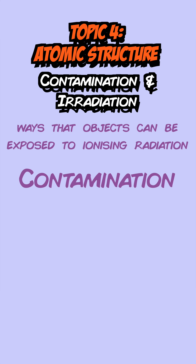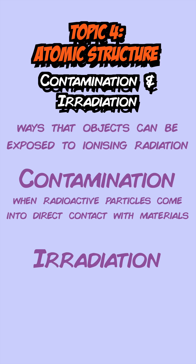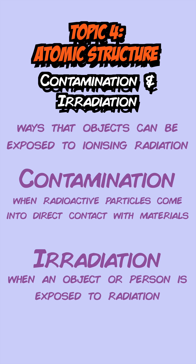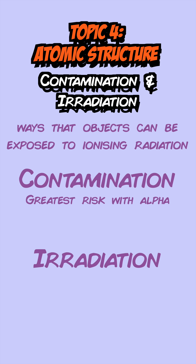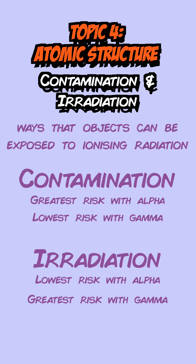Finally, we have contamination and irradiation — two different ways an object can be exposed to ionising radiation. Contamination is when a radioactive particle comes into direct contact with a material or object, whereas irradiation is when an object is exposed to the radiation given off by radioactive particles. Alpha radiation poses the greatest contamination risk because it's the most ionising, but the least irradiation risk because it can't travel far in air. Gamma poses the greatest irradiation risk and the lowest contamination risk.